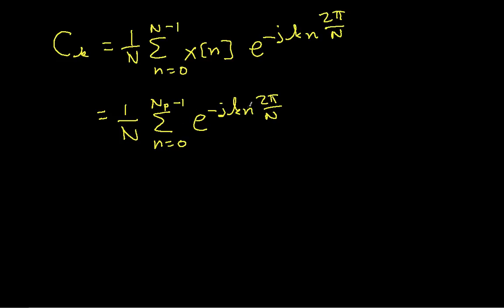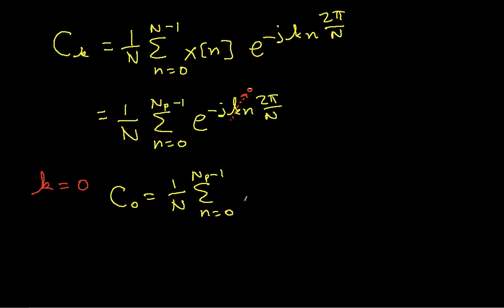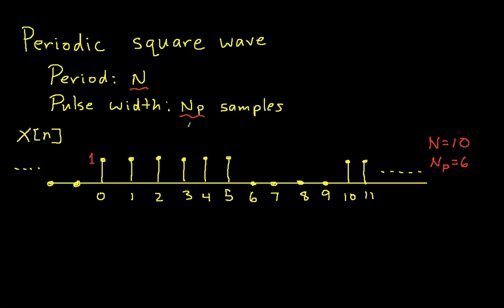Now let's look at the special case when k is equal to 0. When k = 0, the exponent term is 0, and I have e to the 0, which is 1. So when k = 0, I have just 1 over N, summation from n = 0 to N_p minus 1 of 1. If I sum 1 a total of N_p times, I get N_p. So C_0 is just N_p over N, which is just the average value of this waveform averaged over one period.